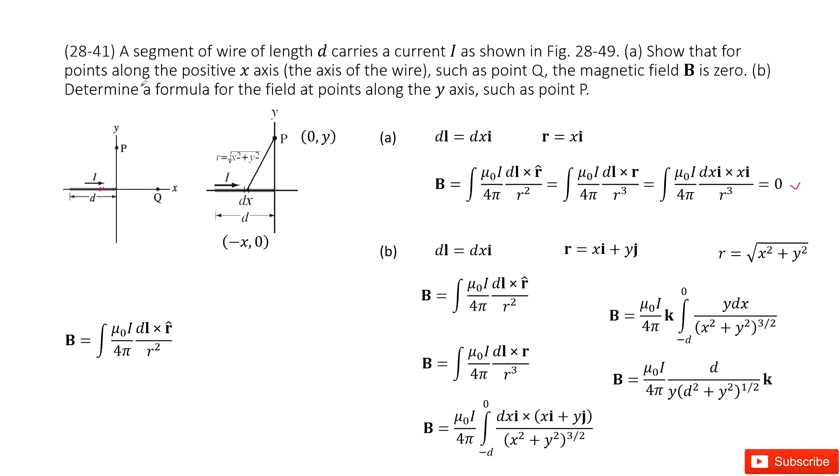The next one determines the magnetic field at position P. At position P, the small fraction DL is still Dxi. But how do you determine the R? The R is from this small fraction to the position we're interested in, P. So we write down the location for P as (0, Y) and the location for this small fraction as (-x, 0).